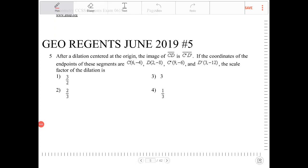After a dilation centered at the origin, the image of segment CD is C prime D prime. If the coordinates of the endpoints of these segments are, and they list out the coordinates here, the scale factor of the dilation is.